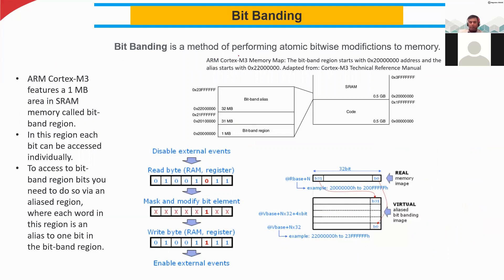Bit banding is a method of performing atomic bitwise modifications to memory. This is from the reference manual, which you can also read. The ARM Cortex-M3 features a 1 MB area in SRAM memory called the bit band region. Here you can see how the memories are divided: the bit band alias holds 32 MB, and the bit band region has 1 MB capacity. In this region, each bit can be accessed individually.